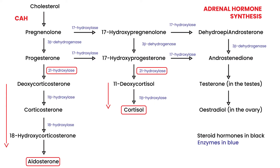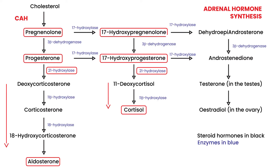The next problem is that precursors build up because they're not being converted into anything else, since this enzyme is deficient. When those precursors build up, they get shunted into another pathway that produces three androgens, and those androgens can cause virilization in females.